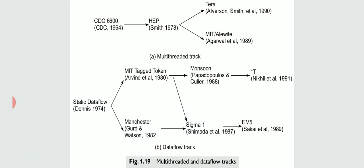CDC 6600, developed in 1964, was the starting point for the multi-threaded track. Later it was developed through HEP projects, Tera, and MIT's Alewife projects. Today multi-threaded technology is much matured and has reached the saturation stage — almost all concepts of multi-threaded technology are understood by the world. This development took place over forty to fifty years.